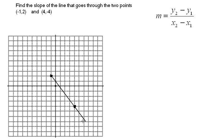We want to find the slope of that line. Notice that from left to right it goes downhill, so we can assume the slope has got to be negative. And it looks like it's a pretty steep slope — maybe more than one — but we have to calculate it.